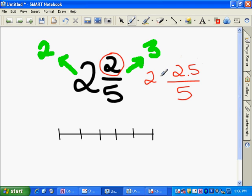So when I look at the numerator 2, I think, okay, is 2 greater than or less than 2.5? And in this case, 2 is less than 2.5.